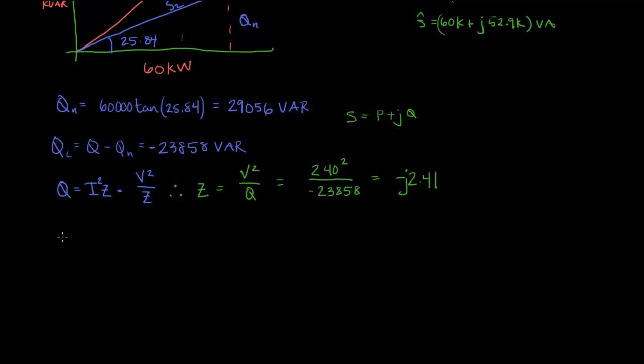So remember that Z for a capacitor equals minus J times 1 over omega C. And so we get minus J 2.41 is equal to minus J times 1 over omega C. So I can cancel out the J's. You know, if you divided them out, you just get positive 1.